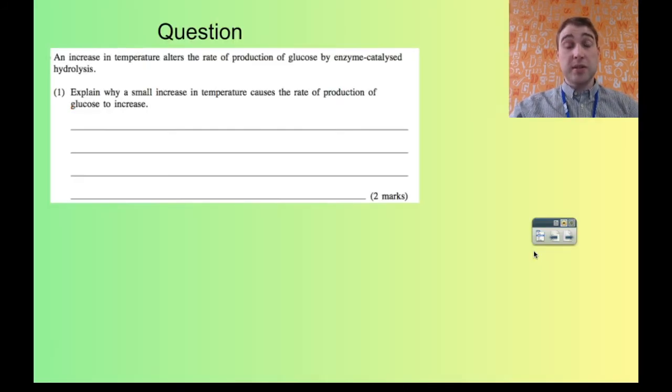Let's look at some questions. This question says, an increase in temperature orders the rate of production of glucose by enzyme-catalyzed hydrolysis. Explain why a small increase in temperature causes the rate of production of glucose to increase. If you're increasing the temperature, you're increasing the energy of the particles that are in your mixture. If you're increasing the energy of the particles when they collide, more of the particles are more likely to have the required energy to start off the reaction. By increasing the temperature, you're increasing the number of particles with the right amount of energy for the reaction to occur. And that will increase the rate of reaction.